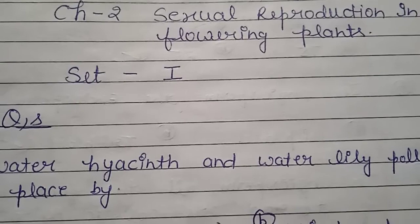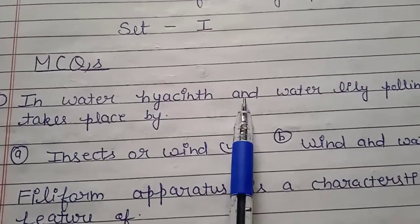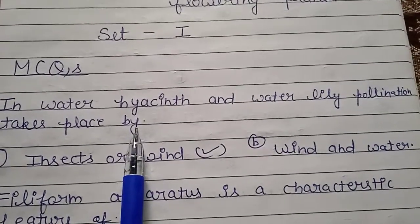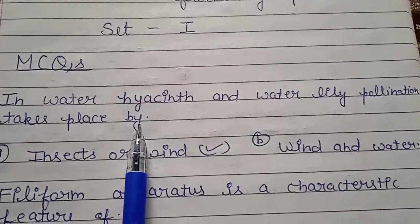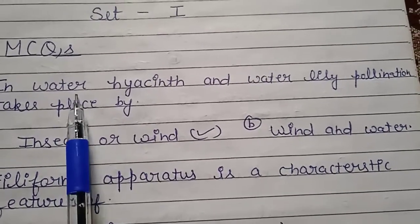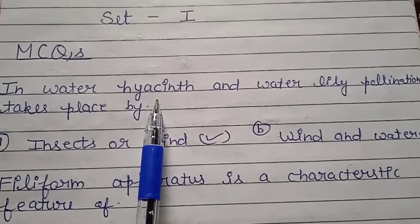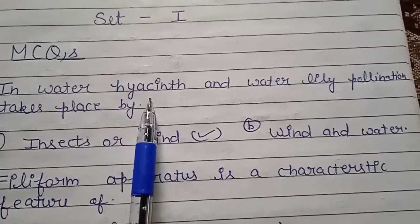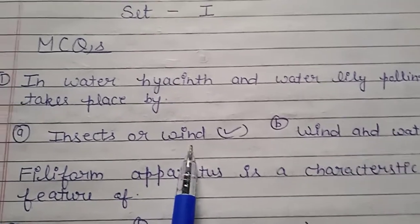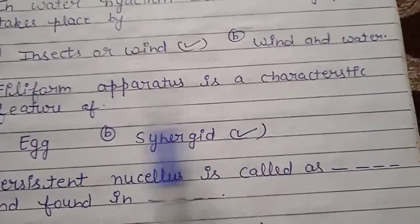The first MCQ is: in water hyacinth and water lily, pollination takes place by whose help? The right answer is insect or wind. So water hyacinth and water lily pollination is by insect and wind.